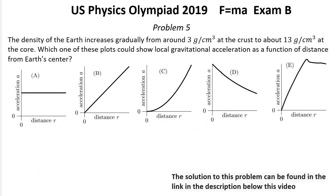Problem number 5. The density of the earth increases gradually from around 3 g per cubic centimeter at the crust to about 13 g per cubic centimeter at the core. Which one of these plots could show local gravitational acceleration as a function of distance from earth center?